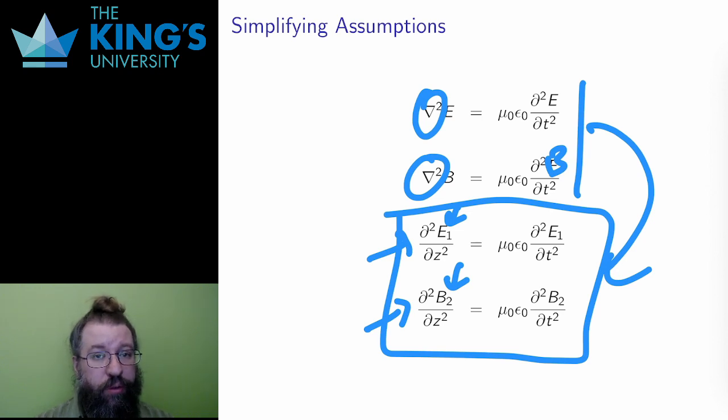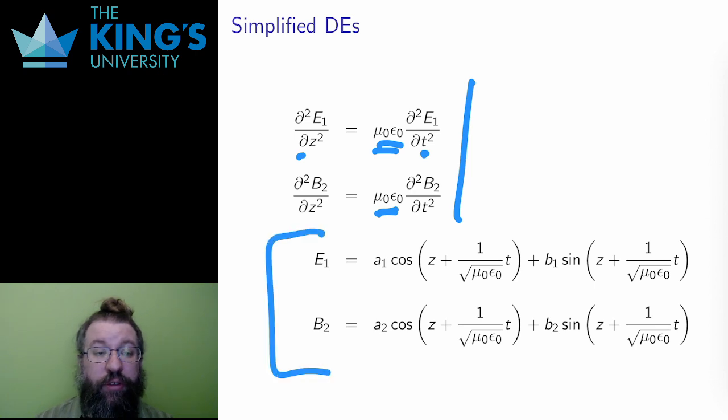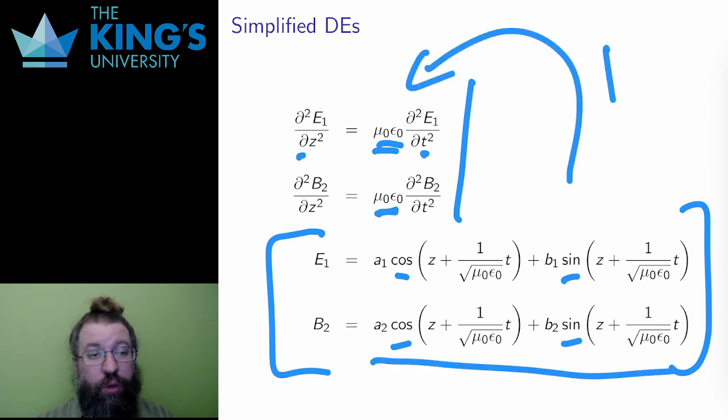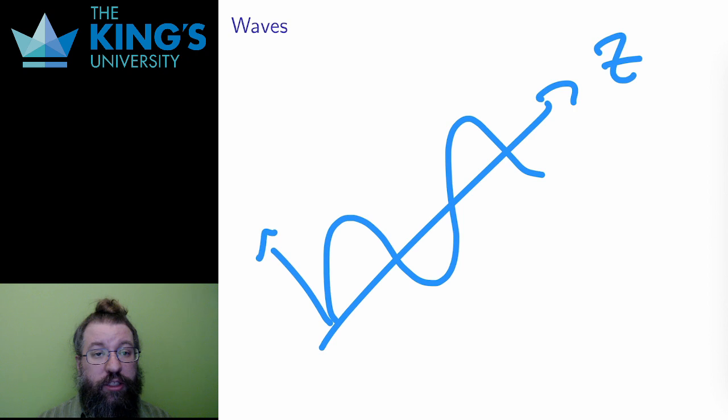These two equations have solutions. I need functions where the second z derivative and the second time derivatives are the same except for these constants. Functions that satisfy this are combinations of sine and cosine. Feel free to check that both these functions actually do satisfy these equations by doing the two second derivatives. So, the result is a set of sine and cosine waves. They depend on z, which means that they propagate in the z direction. E is only in the first component, so it oscillates in the x direction, and B is only in the second component, so it oscillates in the y direction.